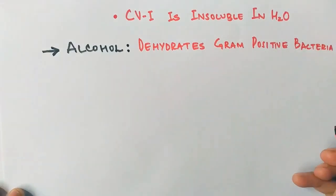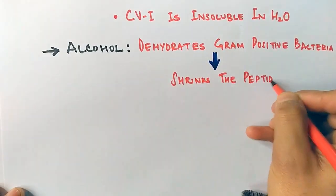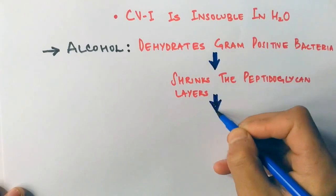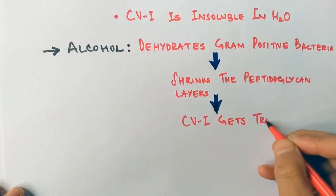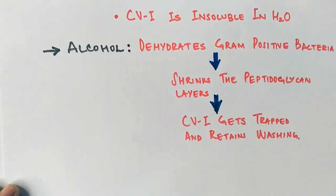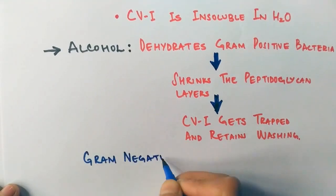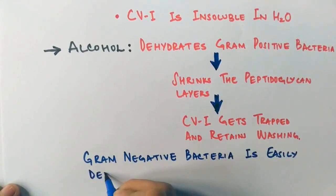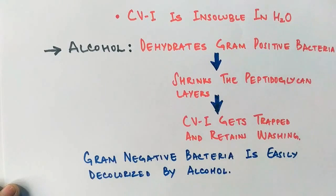Alcohol shrinks the peptidoglycan layer, and by shrinking the peptidoglycan layer, the CV-I complex gets more easily trapped and retained after washing, whereas in the case of gram negative bacteria, it's easily decolorized by alcohol.